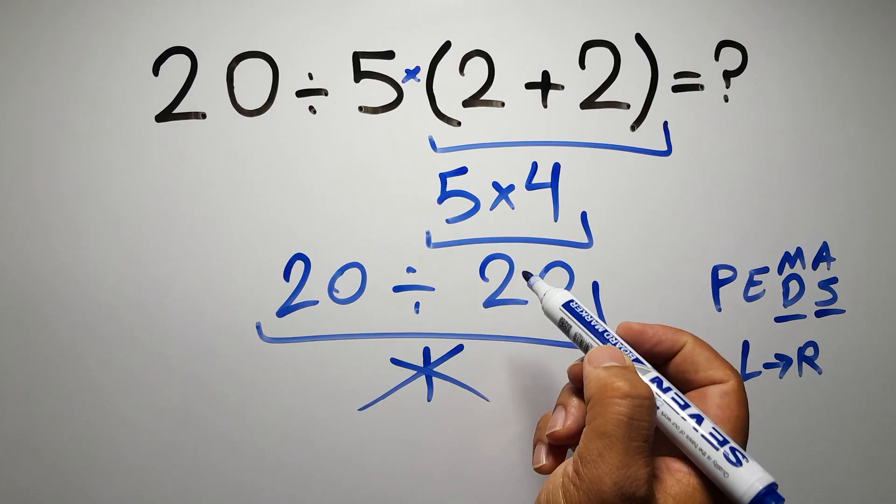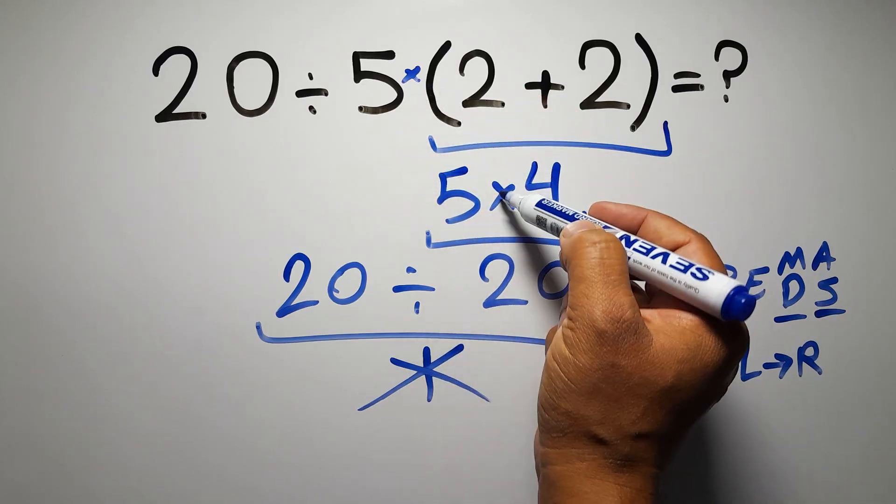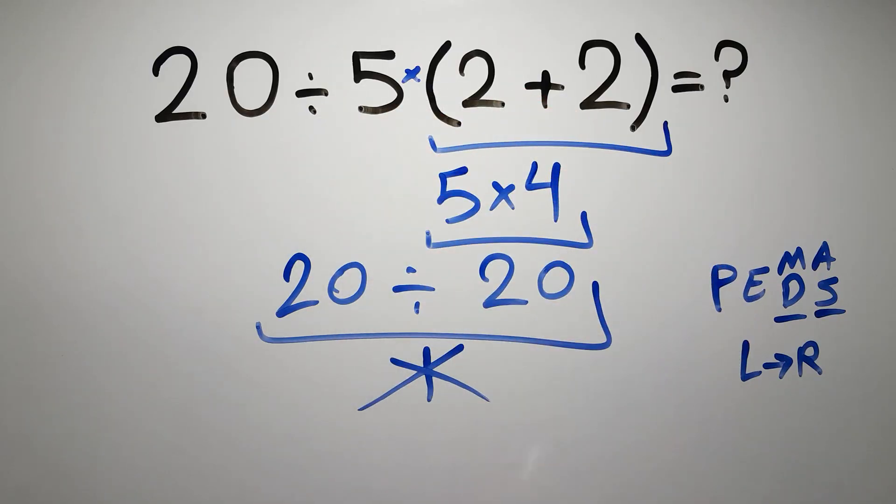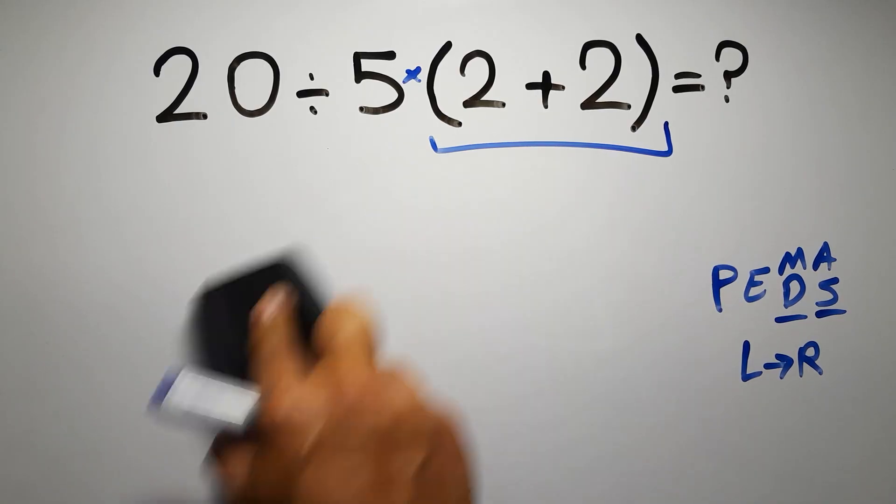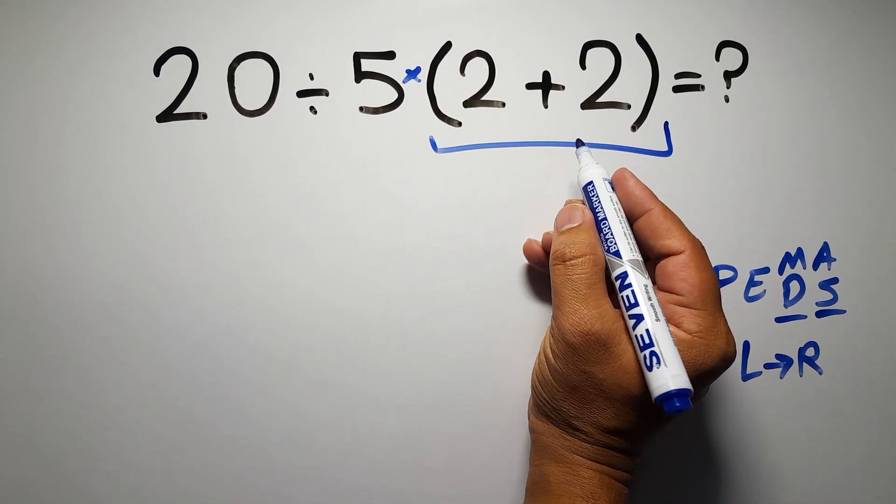and finally this multiplication. If we do this multiplication before this division, it is wrong. So first, this parentheses.